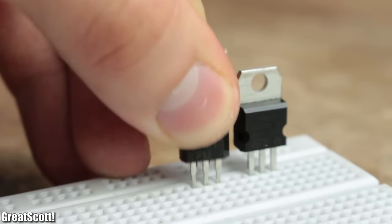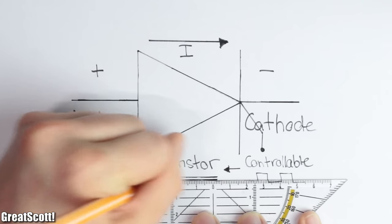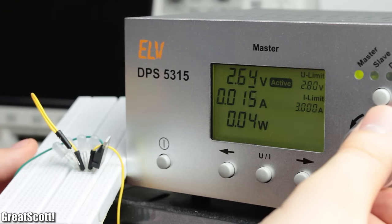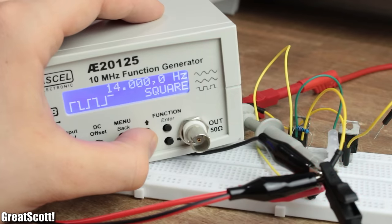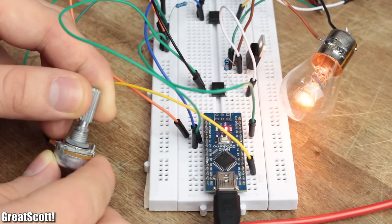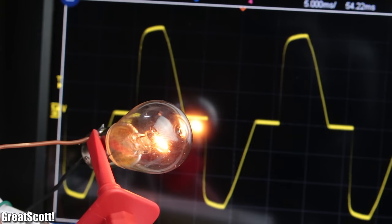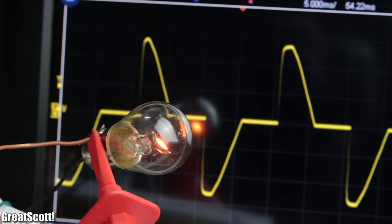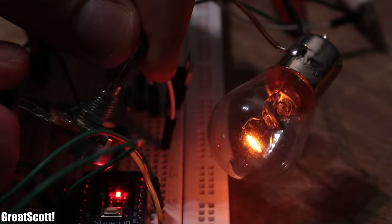Well, the component does exist and it is called a thyristor. So in this video, let's talk about the basics of it and in the end build an experimental phase angle control circuit that can control the power consumption of certain AC appliances. Let's get started.